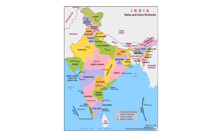Andhra Pradesh shares its boundary with Tamil Nadu, and it is also sharing its border with Karnataka. It shares its boundary with Telangana in the north. Andhra Pradesh also shares its border with Chhattisgarh, and it also shares its border with Orissa. So, the border states of Andhra Pradesh are Tamil Nadu, Karnataka, Telangana, Chhattisgarh, and Orissa. Andhra Pradesh has a coastline with the Bay of Bengal.